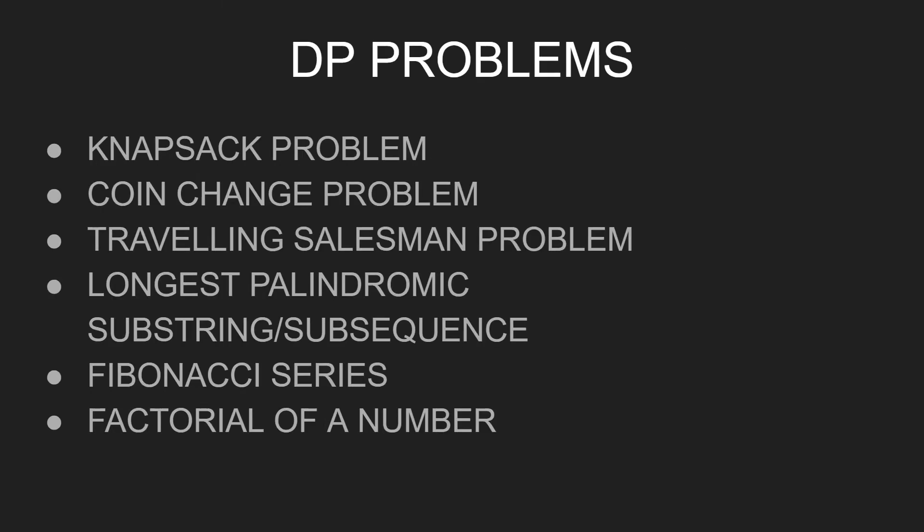Coming to dynamic programming problems. For the Power Programmer role, a DP problem is expected most of the time. They ask standard problems like the knapsack problem, the coin change problem. The traveling salesman problem is not asked most of the time, but it is a rare one. The longest palindromic substring and even subsequence — these are just tweaked versions of each other, almost similar. Then the Fibonacci series — there are many ways to implement it, but DP is the most efficient. And then the factorial of a number.